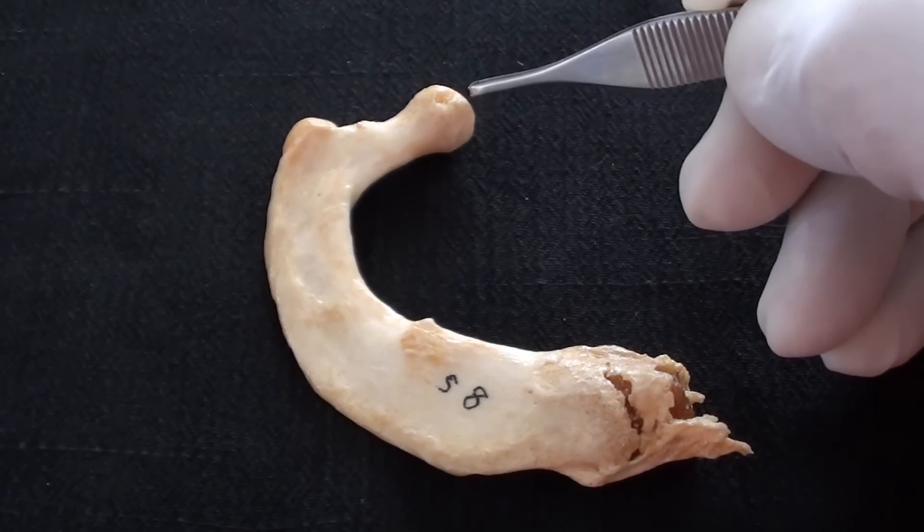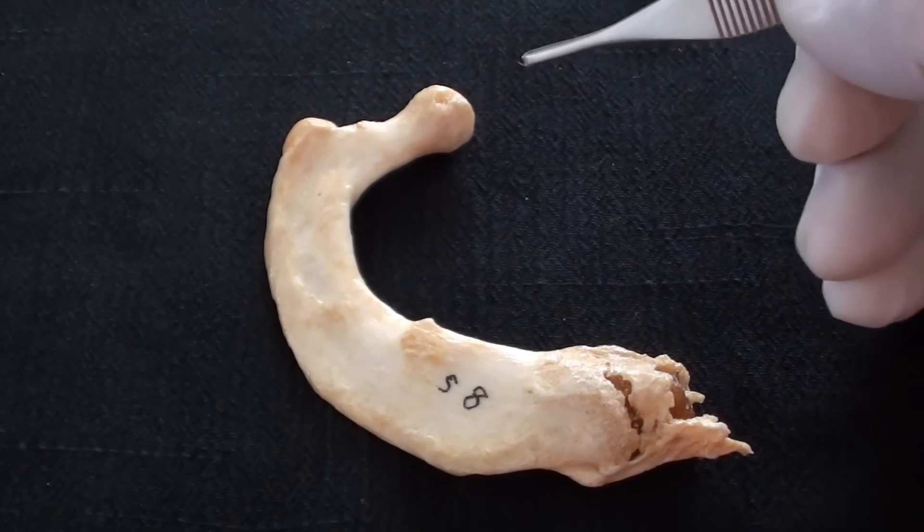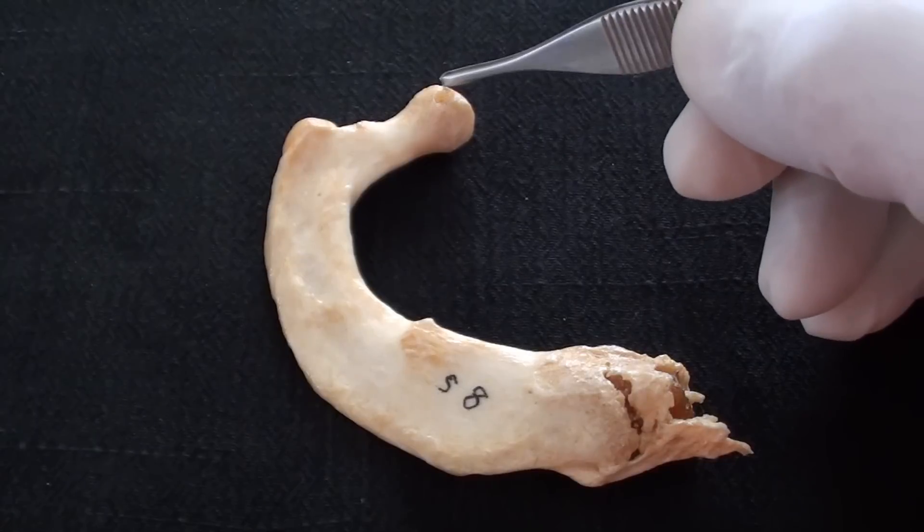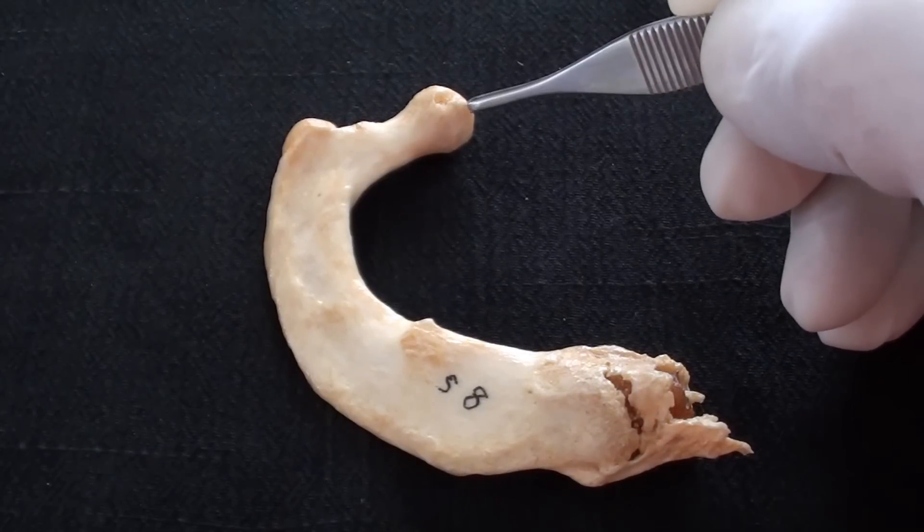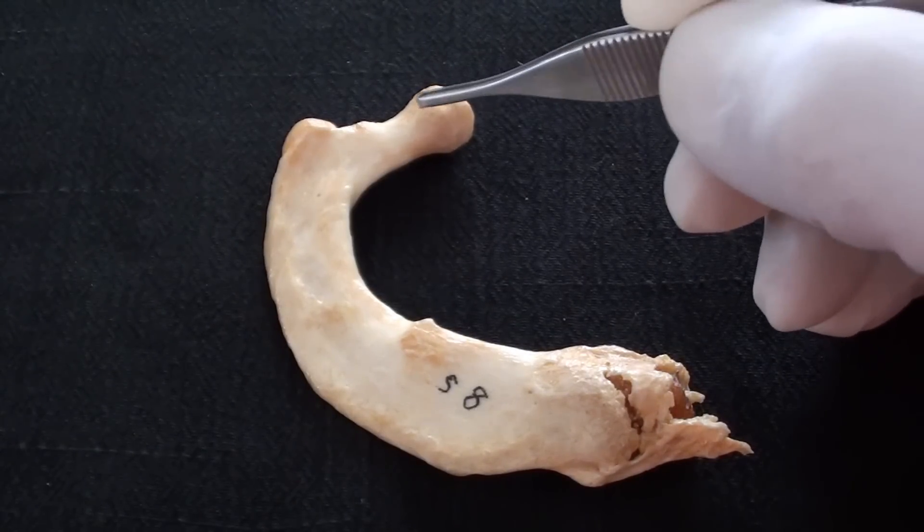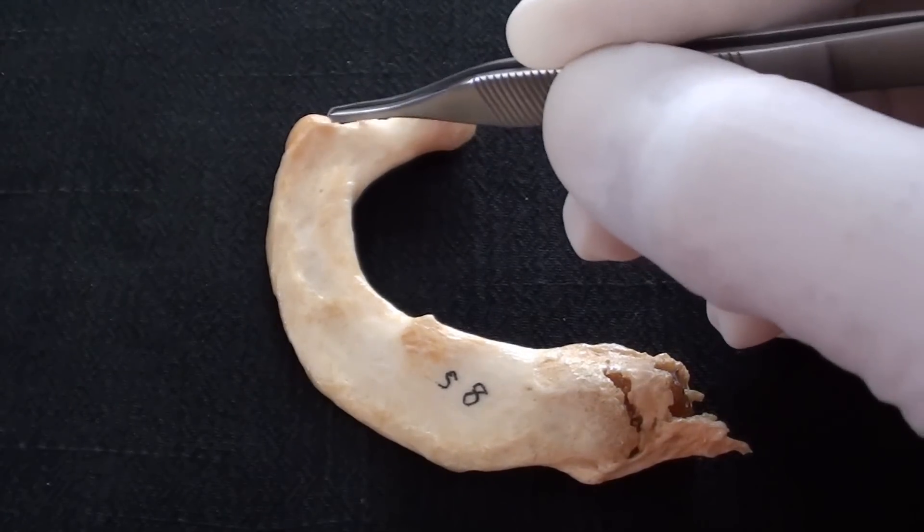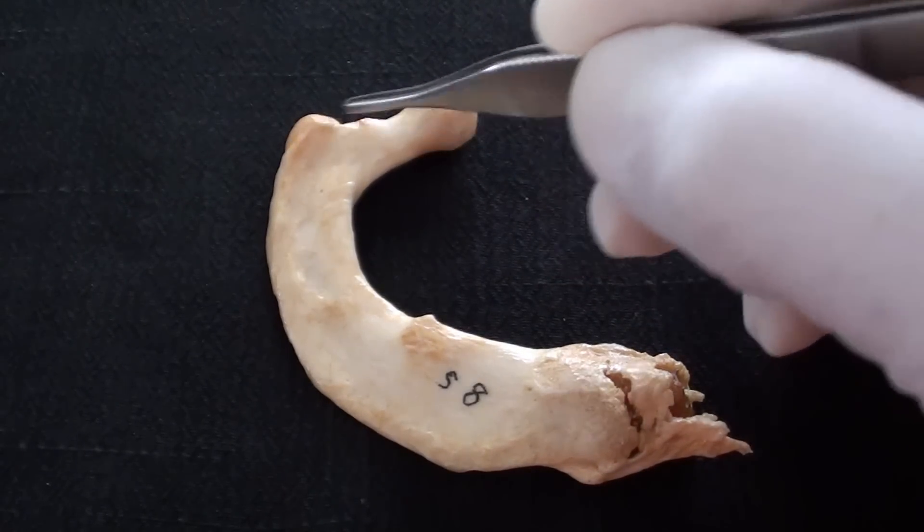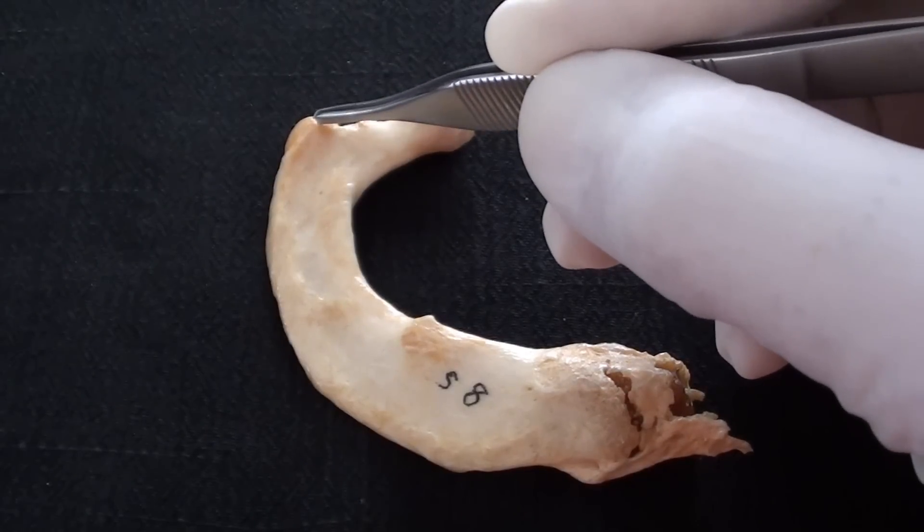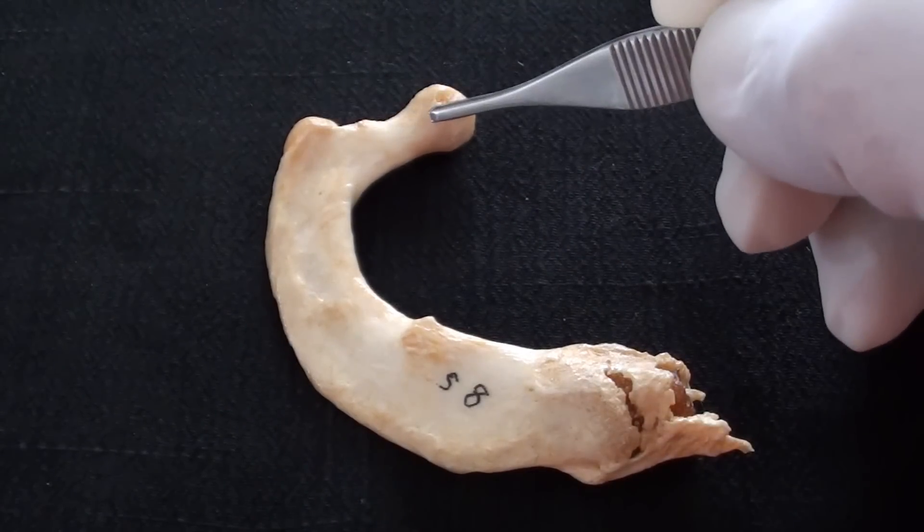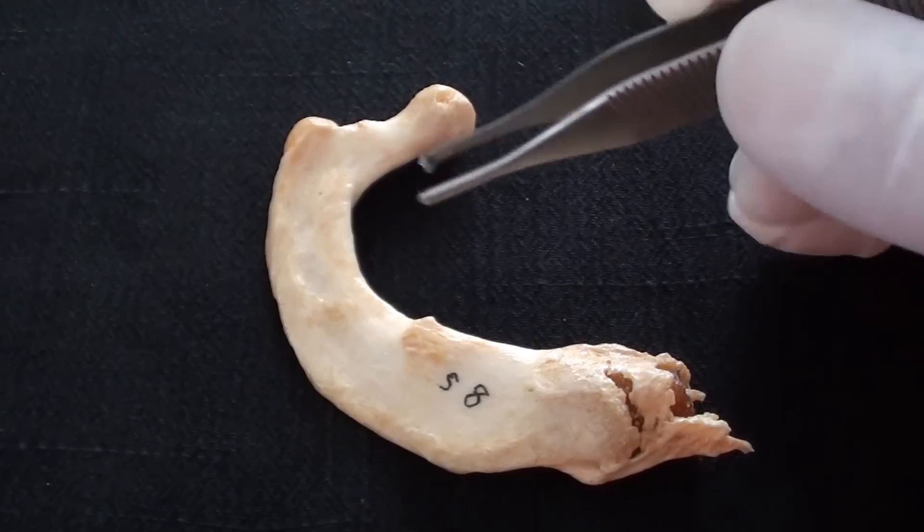As rib number one does not fit in between two vertebrae, however it makes direct contact only with the body of the first thoracic vertebra. This is the neck. This is the tubercle. Rib number one would make additional joint with the transverse process of first thoracic vertebra.